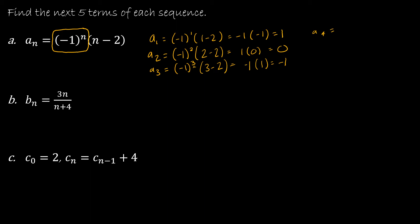A sub 4 would be negative 1 to the 4th, which gives me positive 1, and then 4 minus 2 — so it's 1 times 2, which is 2. And then a sub 5 is negative 1 to the 5th, which gives me negative 1 again, and then 5 minus 2 is 3, so negative 3.